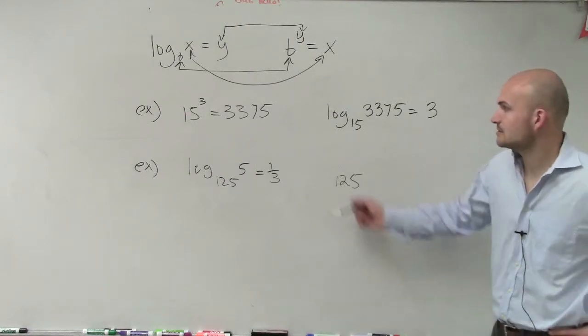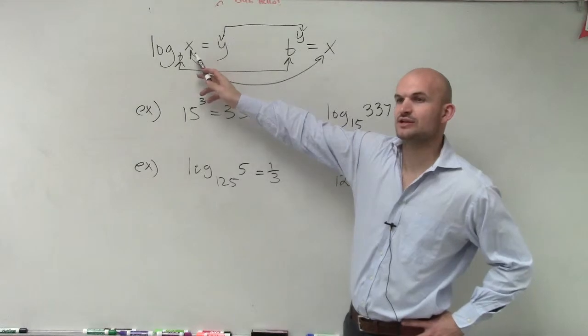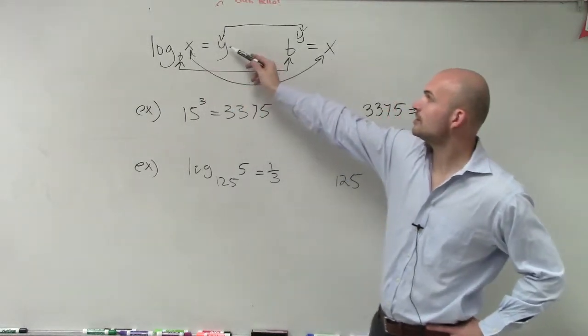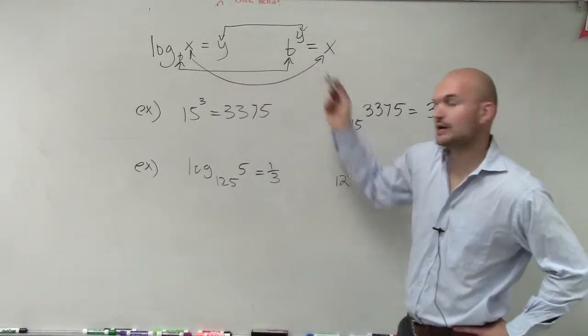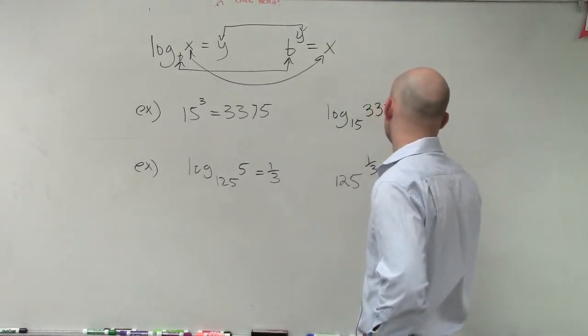Now the next step we look at is we just follow these formulas and see where everything's going to go. So it equals 1/3, and that's going to be now your exponent. So it's 125 to the 1/3 power equals 5.